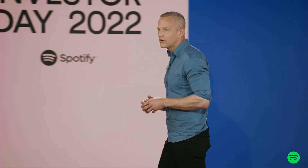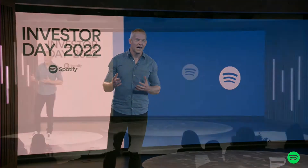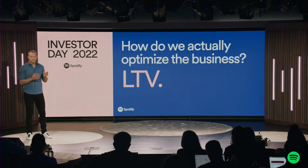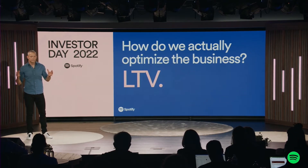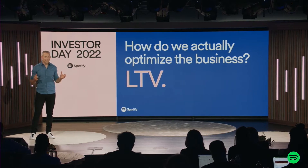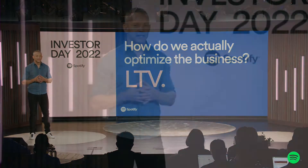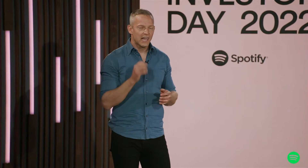Now that you've heard how the technology and content from different verticals come together into this single consumer experience across multiple business models, a natural question you might have is: how do we actually optimize the business across these verticals when there's the potential for wildly different business outcomes depending on which piece of content the consumer clicks on? It's a tricky problem. This goes back to the metric Daniel mentioned earlier — lifetime value, or LTV for short.